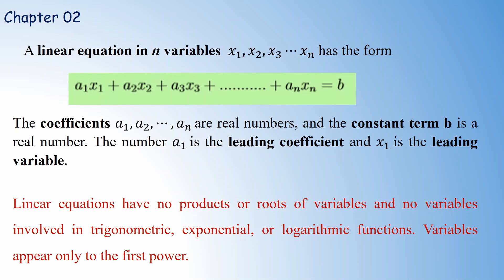We call this a linear equation because it does not contain any product, root, or any higher-order terms of variables x1, x2, x3, ..., xn, and also it does not have any trigonometric, exponential, or logarithmic relationship. Therefore, we call it a linear equation, and the variable appears only to the first power.